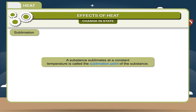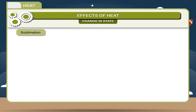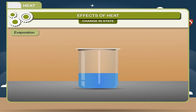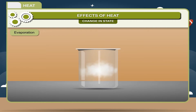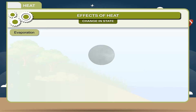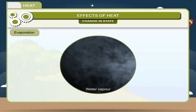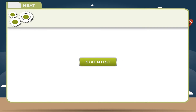A substance sublimates at a constant temperature called the sublimation point. Evaporation: the change of a substance from its liquid state to its gaseous state at any temperature is called evaporation. For example, water vapor is always present in the atmosphere due to the process of evaporation. Hot surroundings, movement of air, and large surface area speed up the process of evaporation.